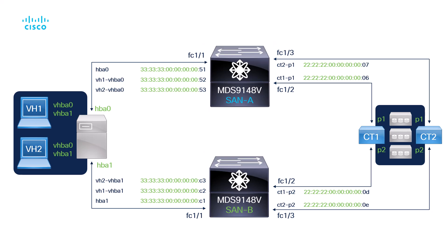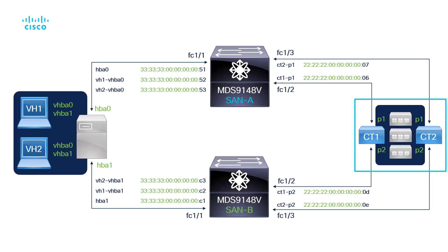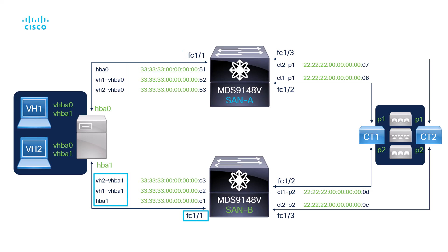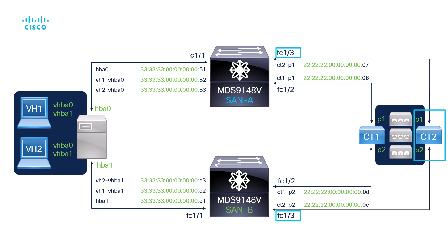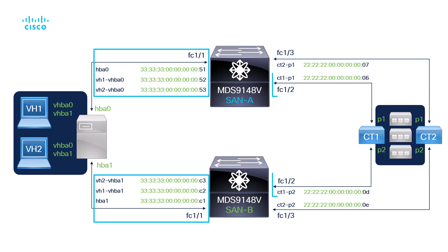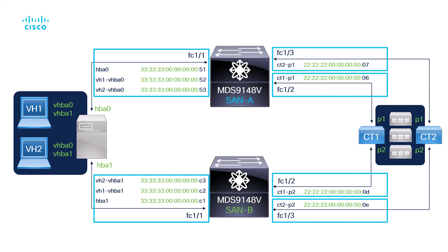On the left-hand side, you can see a physical server hosting two virtual hosts, and on the right-hand side you have your storage array connected to redundant controllers that are dual-homed to both fabrics. From the server side, all the hosts HBA0 are connected to FC1-1 on fabric A, and HBA1 to FC1-1 on fabric B. From the storage side, Controller 1 ports are connected to FC1-2 on both fabrics, and Controller 2 ports are connected to FC1-3 on both fabrics. The respective PE-WWNs of the devices are also shown on the switch side interfaces FC1-1 to FC1-3 respectively.